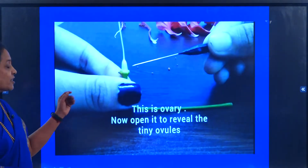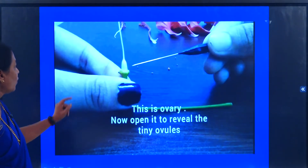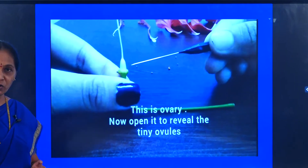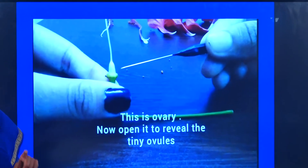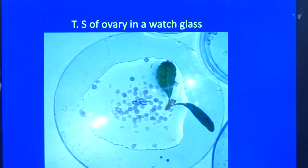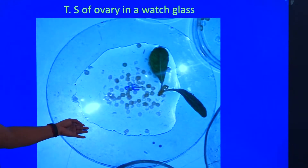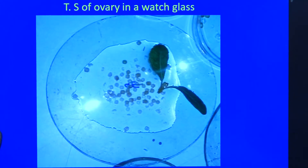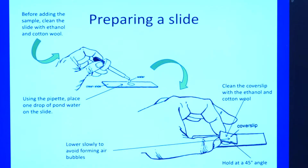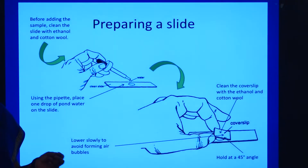This is the ovary. When we observe the gynoecium, it will have the ovary, the style, and stigma — these constitute the gynoecium. We are going to take the section of the ovary. When we take a section of the ovary, it appears like this in a petri plate or a watch glass. This is how we are going to mount the sections.